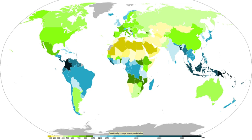There are four main mechanisms for cooling the air to its dew point: adiabatic cooling, conductive cooling, radiational cooling, and evaporative cooling. Adiabatic cooling occurs when air rises and expands — the air can rise due to convection, large-scale atmospheric motions, or a physical barrier such as a mountain. Conductive cooling occurs when the air comes into contact with a colder surface, usually by being blown from one surface to another, for example from a liquid water surface to colder land.